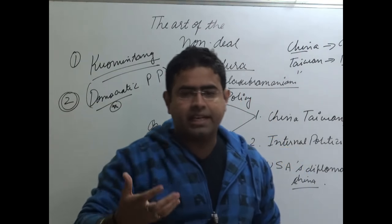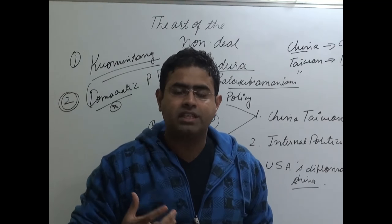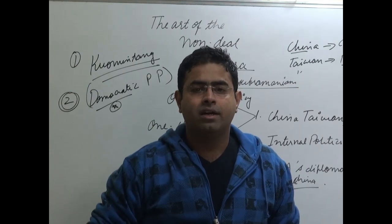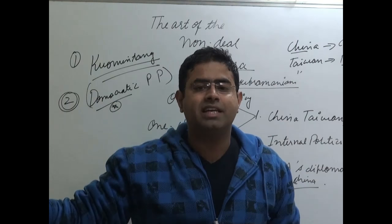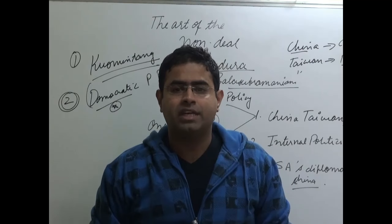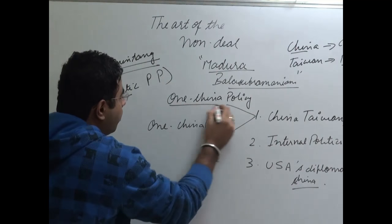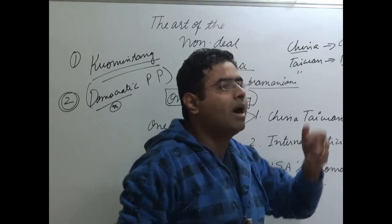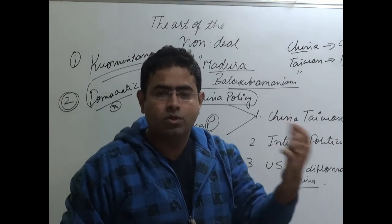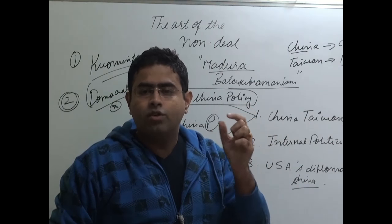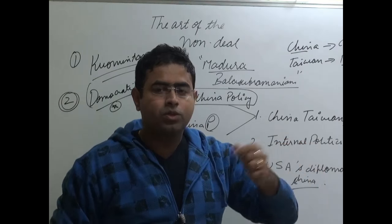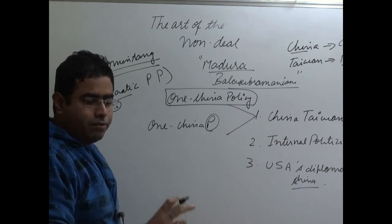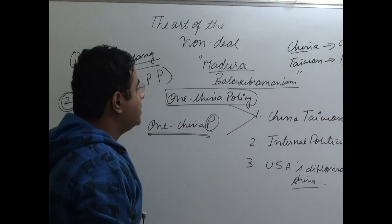China has always been asserting itself over Taiwan. It had always conveyed to the world that any country, if it wants to trade with China, that particular country should not recognize Taiwan as an independent nation. Any country willing to trade with China should believe in one China policy. So what is one China policy? One China policy means the de-recognition of Taiwan as a single country, that you give no recognition to Taiwan but you treat Taiwan as a part of China.